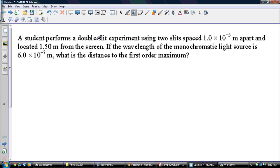Let's see what it says. Student performs a double slit experiment using two slits spaced 1.0 times 10 to the negative 5 meters apart, located 1.5 meters from the screen. If the wavelength of a monochromatic light source is 6.0 times 10 to the negative 7 meters,